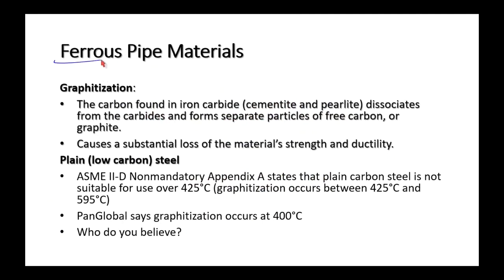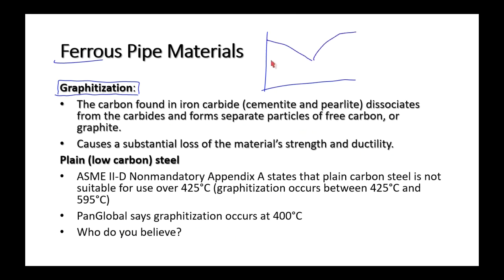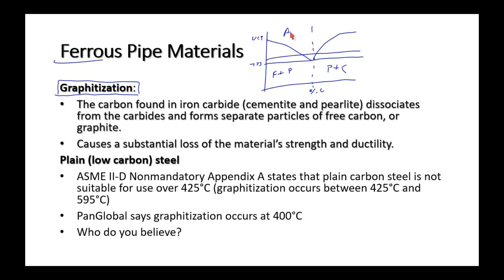Next: materials. Ferrous materials have at least 50% iron. First, let's look at what happens to steel at high temperature. On the iron-carbon phase diagram: percent carbon on the bottom axis, different phases shown — ferrite and pearlite, pearlite and cementite, lower critical temperature, upper critical temperature, and above that, all austenite.